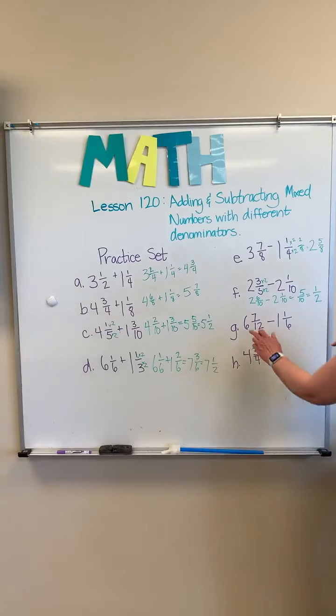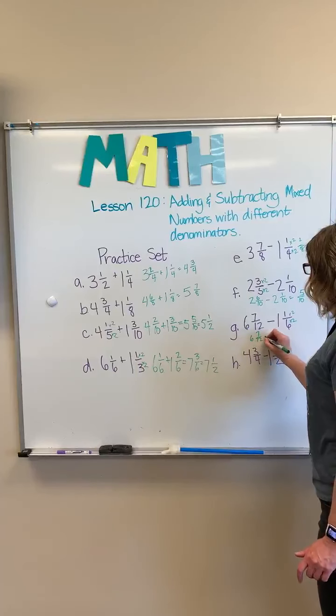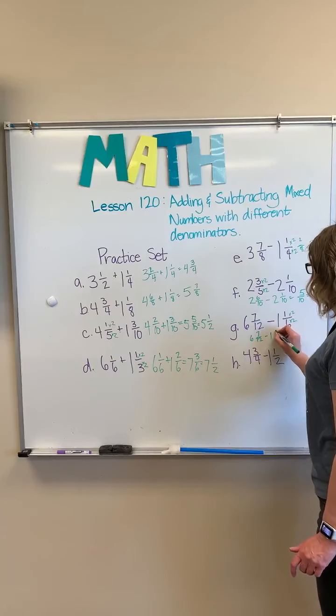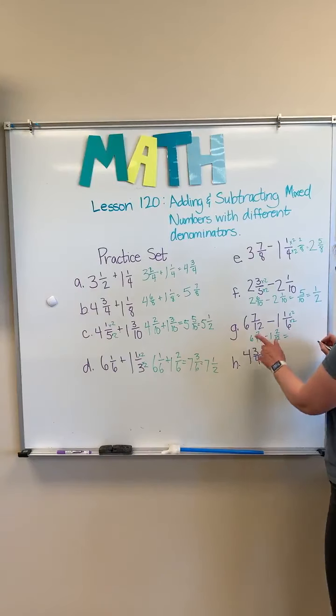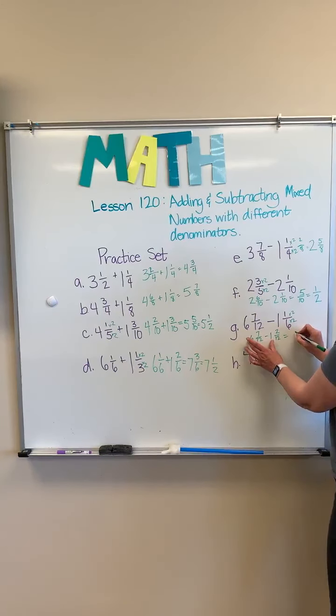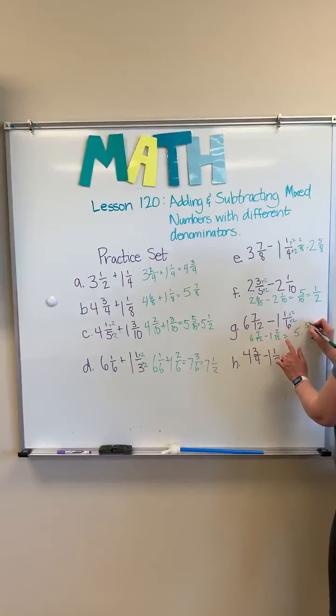Our next part, six and seven twelfths minus one and one sixth. I'm going to keep this the same, but I'm going to multiply this by two and this by two. And we'll have six and seven twelfths minus one and two twelfths. And this ends up, we say six minus one is five, and then seven minus two is five over twelve.